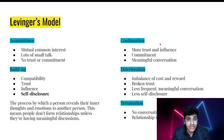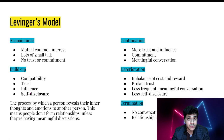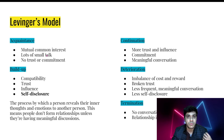Next is the buildup phase. In buildup there's a lot more compatibility, and the key aspect is self-disclosure — bringing out some part of you that you probably won't share with random people. That is self-disclosure, where you're opening up. Self-disclosure is a very important part of moving across Levinger's relationship model. Next comes trust and influence; you start to realize you have a say in this relationship and community. People don't form relationships unless they're having meaningful discussions.